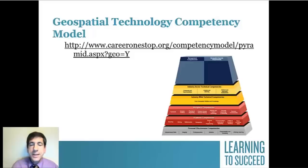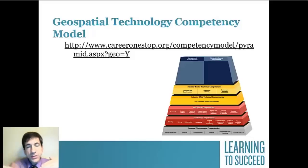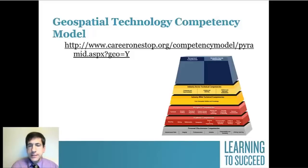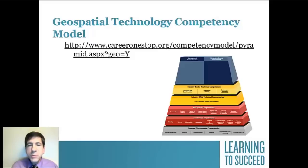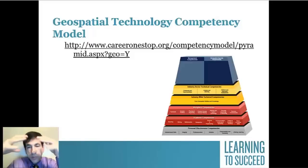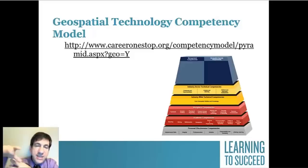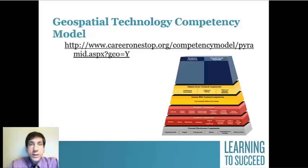The second tier is academic competencies — mathematics, cartography, computer science, engineering, geography, and so on. The third tier is workplace competencies: teamwork, creative thinking, preparing, planning, organizing, communicating, quality control, and all that. Moving up the pyramid are industry and occupation-specific competencies — for example, GIS as a city planner versus GIS in business marketing.